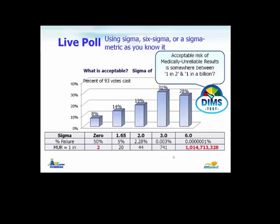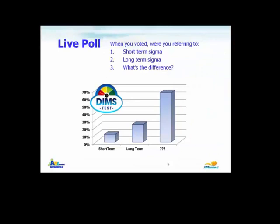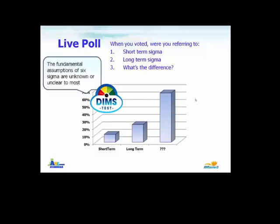If you said you want a sigma of six, then you want it to be one in a billion — you may not be able to attain that goal. Then we added the complication of short-term sigma versus long-term sigma, and what is the difference? Most people don't even know there's a difference between short-term and long-term sigma, and yet part and parcel of the six sigma concept is a difference of 1.5 SDs between short and long-term sigma. The fundamental assumptions of six sigma are unknown or unclear to most people in the lab.